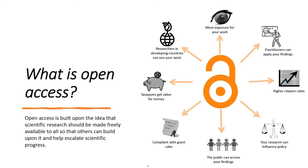As a result, researchers often could not access studies that they wished to, and this started affecting the progress of research. The need to remove this roadblock gave rise to the open access model of publishing, in which readers have unrestricted and immediate access to research after it has been published, with the permission to reuse it.